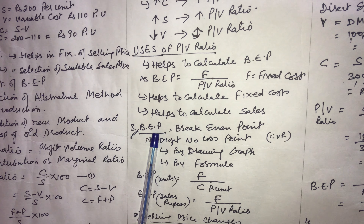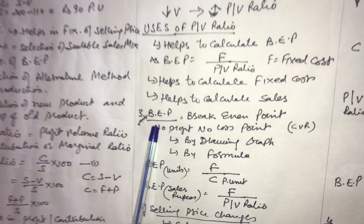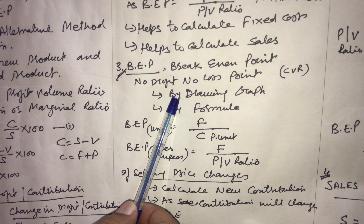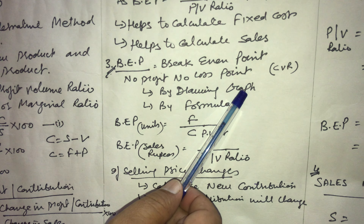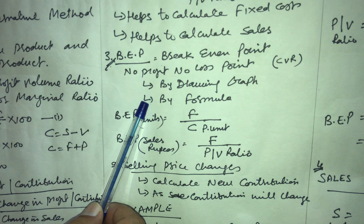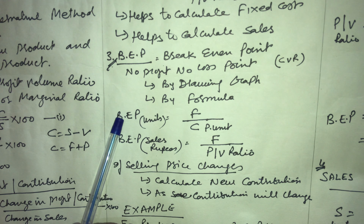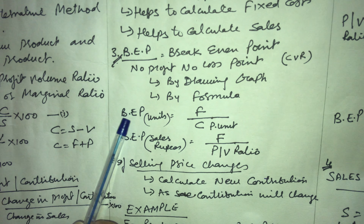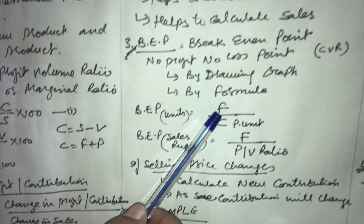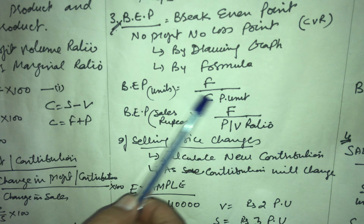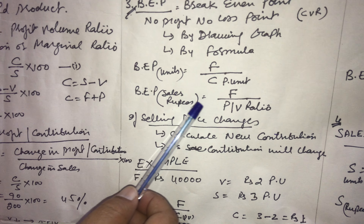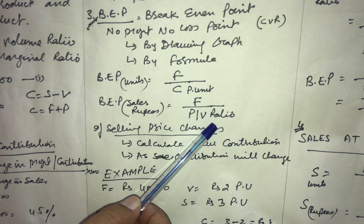The third important term is the breakeven point — a point at which there is no profit and no loss. Breakeven point can be calculated in two ways: by drawing graphs, or by formula. Here we will use the formula. Breakeven point in units equals fixed cost upon contribution per unit. Breakeven point in volume or sales rupees equals fixed cost upon PV ratio.